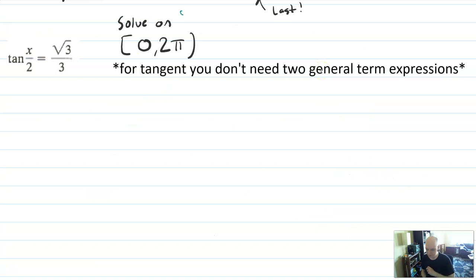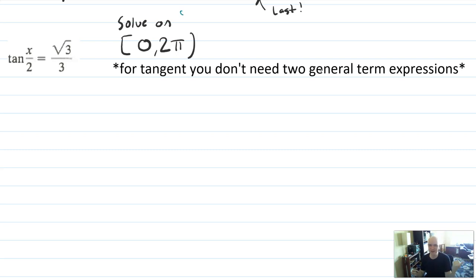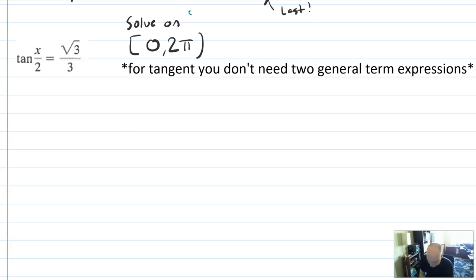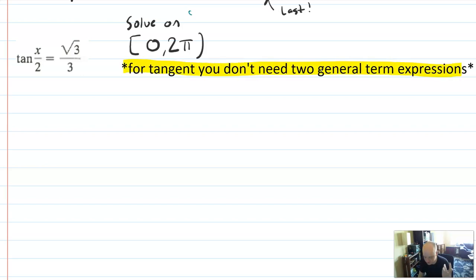Let's do one more in this video — a tangent example. We've done sine and cosine; now we'll do tangent. You can also do this with secant, cosecant, and cotangent — just take the reciprocal and turn it into sine, cosine, or tangent. We're solving this on the interval 0 to 2π. There are two big changes: for tangent, you don't need two general term expressions because the period of tangent is π — so you can just write the one solution plus πn.